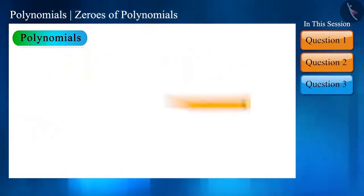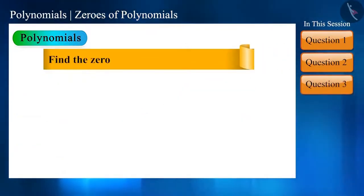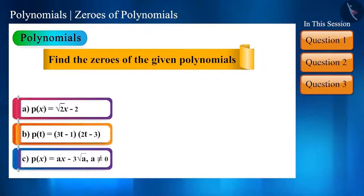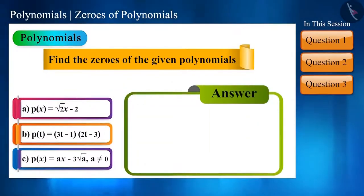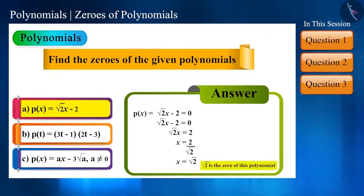Let us now go to the next question. Find the zeros of the given polynomials. To find the zeros, we equate the polynomial to zero. So, let us now first find the zeros of the polynomial. The zero of this polynomial is √2.